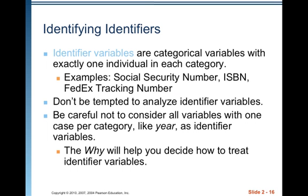So you really have to think about the why. Identifying identifiers: identifier variables are categorical variables with exactly one individual in each category. For example, your social security number is an identifier variable because that one single number is associated with you and only you. ISBN numbers for books, FedEx tracking numbers — all are examples of identifier variables. Don't be tempted to analyze identifier variables. Be careful not to consider all variables with one case per category, like year, as an identifier variable. The why will help you decide how to treat identifier variables.